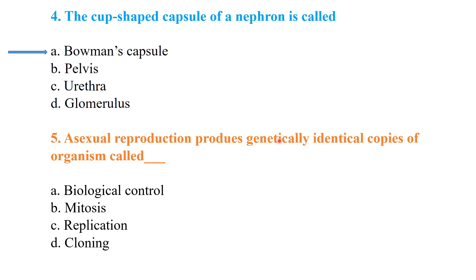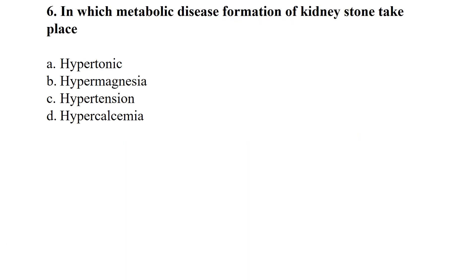Asexual reproduction that produces genetically identical copies of an organism is called cloning — the best answer is cloning, as it produces exact copies of the parent. In which metabolic disease does kidney stone formation take place? Hypercalcemia leads toward kidney stone formation due to elevated calcium levels.